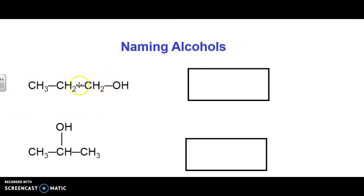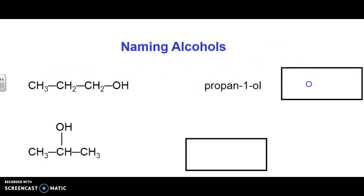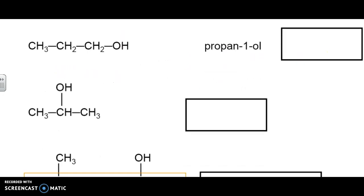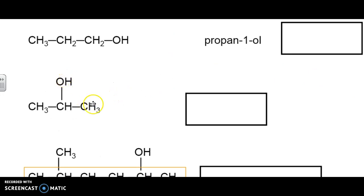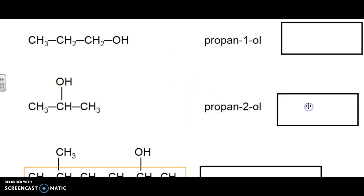This example here is fairly straightforward. We've got three carbons and just our alcohol. Now, this alcohol could be at spot one or it could be at spot two. Therefore, we have to differentiate and say that it's propan-1-ol. In this particular case here, because it's at spot two, this is propan-2-ol.